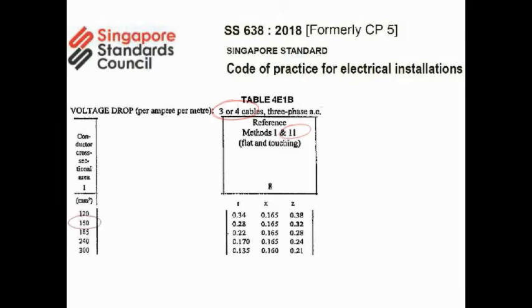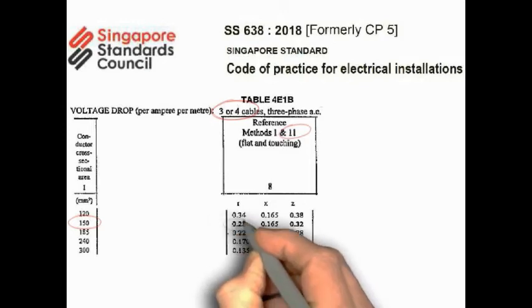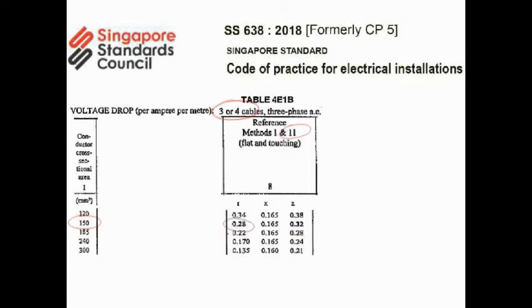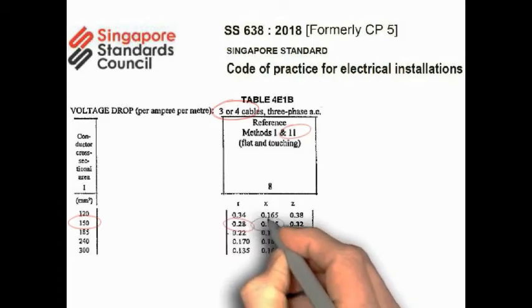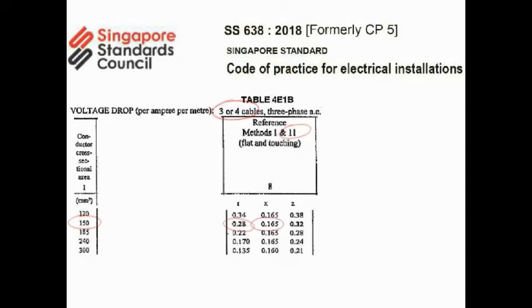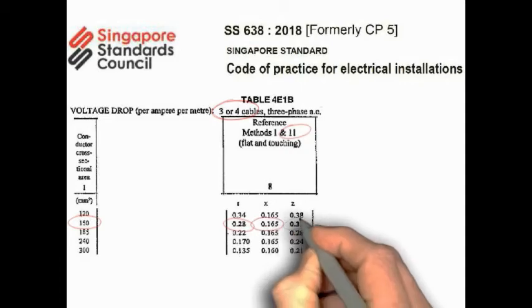For a cross-sectional area of 150 mm squared, we have three values in place: R, X, and Z. R refers to the resistive voltage drop, X refers to inductive voltage drop, and Z is the impedance voltage drop. This value can be used in the calculation model later. From here, we see that R is 0.28, X is 0.165, and Z is 0.32.